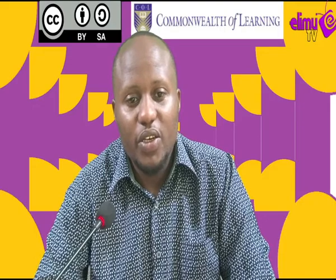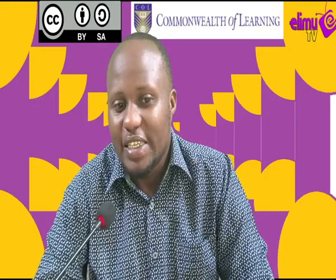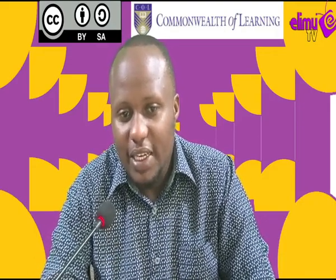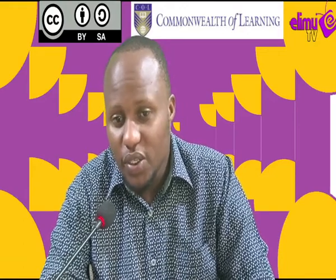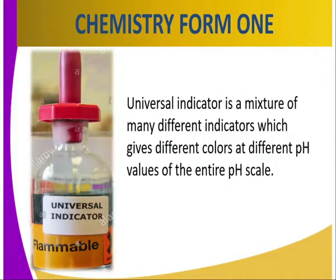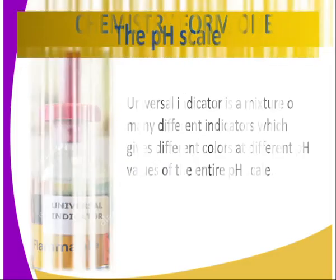So, what is an indicator? A universal indicator is a mixture of many different indicators, which gives different colors at different pH values of the entire pH scale. It is part of an indicator.